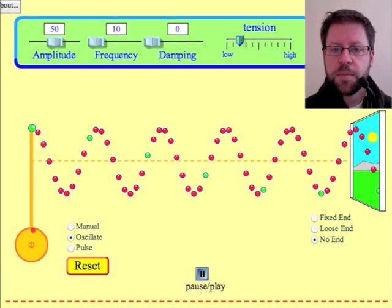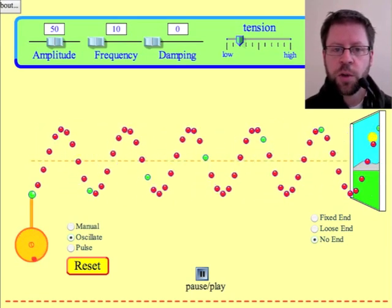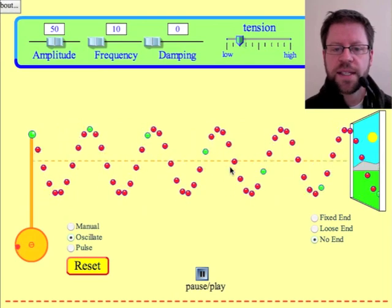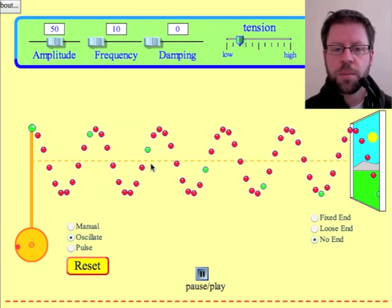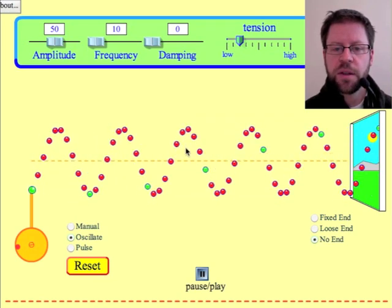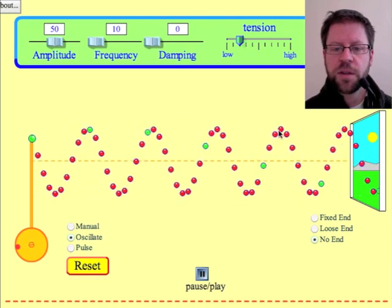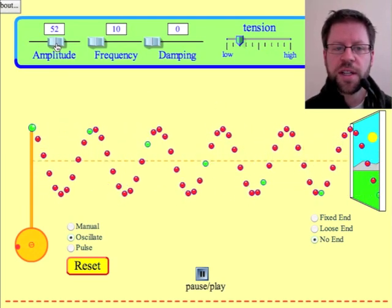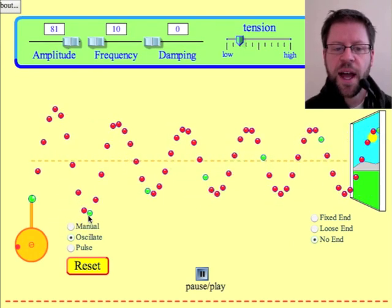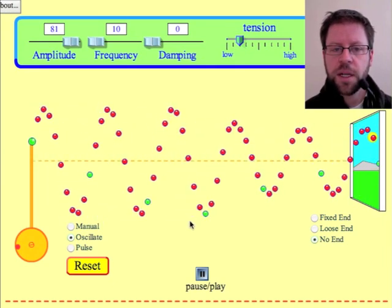Now we come back to the PhET simulation to identify those same terms on this actual wave that's moving by. You'll notice we see the principal axis here. This is a transverse wave because the particle motion is going up and down. You can see the amplitude of the wave here is the height from the principal axis up to the crest. I will go over here and I will adjust the amplitude. You should see that I have now changed the height. Notice the new part of the wave is coming in with this greater magnitude here.